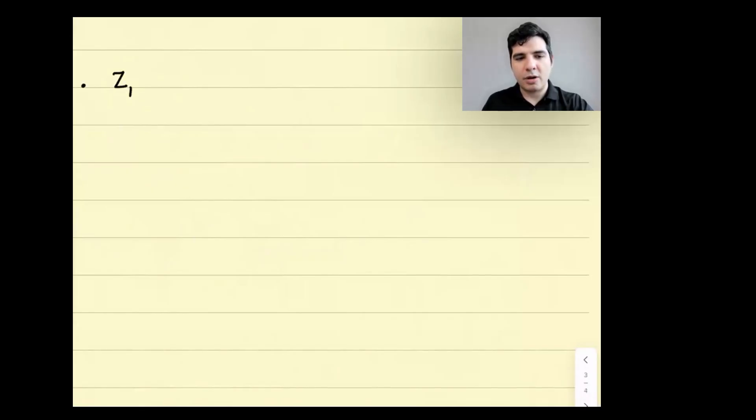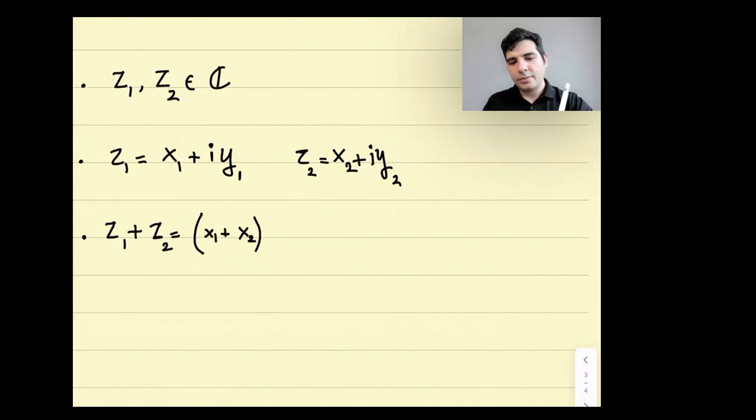So if I have two complex numbers z₁ and z₂, say z₁ can be written as some real number x₁ plus i times another real number y₁, and same for z₂, which equals x₂ plus iy₂, where x₂ and y₂ are real. We define the sum of z₁ and z₂ to be x₁ plus x₂ plus i times (y₁ plus y₂). It's like we consider the real part, look at their sum, and consider the imaginary part and look at their sum.